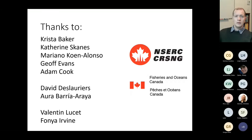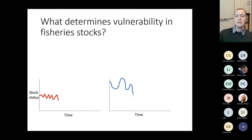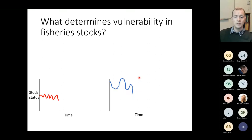When asking what determines vulnerability of fish stocks, we need to look at not just total biomass but also how it's changing over time. If we compare two stocks — the red on the left and the blue on the right — and look only at biomass at a particular point in time, we might think the blue stock is less vulnerable simply because it's at higher abundance in the ecosystem.